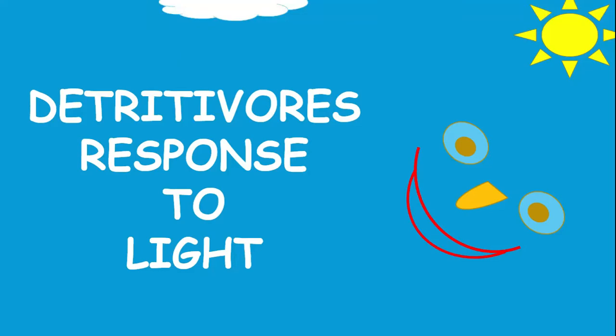Being able to detect and respond to different light intensity is very important for many organisms, as some are nocturnal while others are diurnal. This response could dictate the ability of that organism to find food, mate, water, shelter, escape predators, and their general survival.